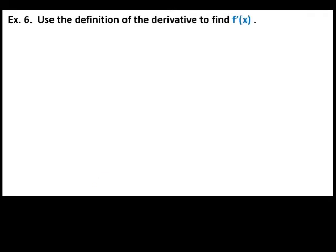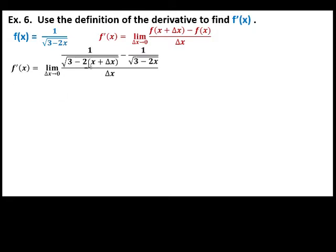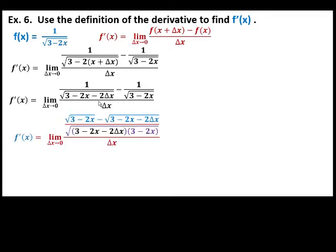Use the definition of the derivative to find f prime of x of this function: 1 over square root of 3 minus 2x. Starting with the definition of the derivative, we replace x with x plus delta x minus the original function. Then perform the operation of these fractions — the LCD is the denominators — and the denominators combine as one. Then simplify.